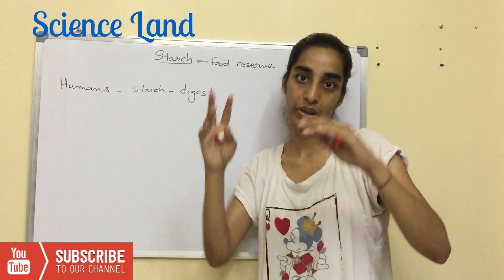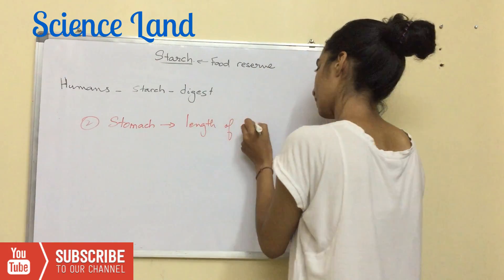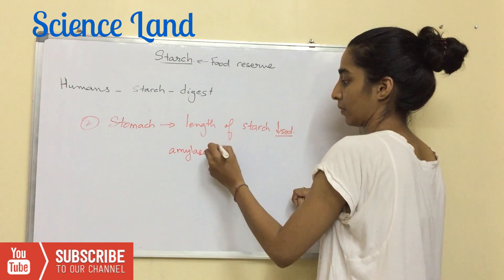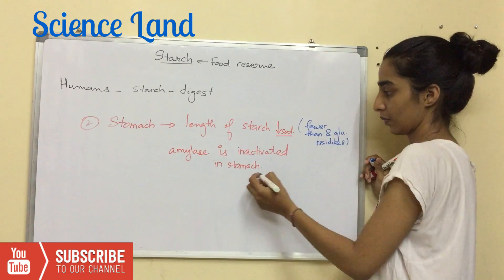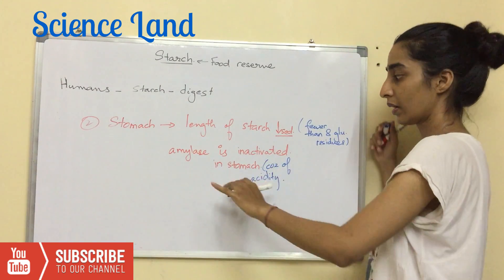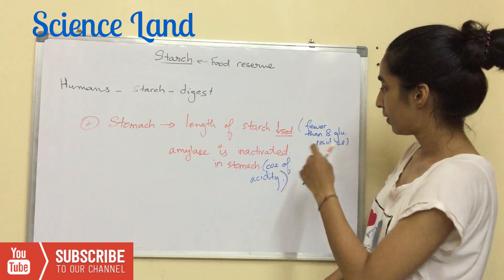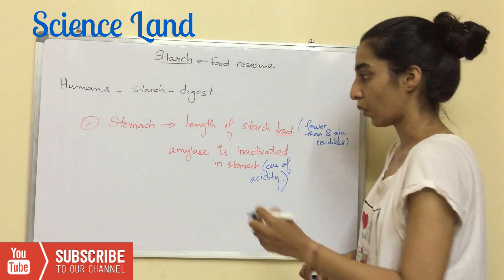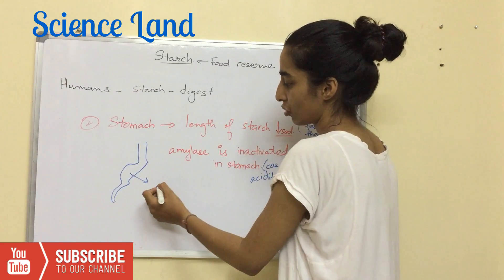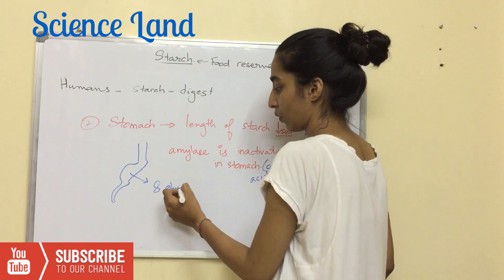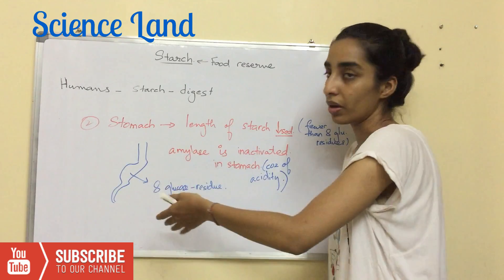From the mouth, the food reaches the stomach where amylase is inactivated due to acidity. At the same time, the length of the starch is reduced to less than 8 glucose residues, which need to be further broken down.